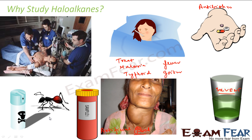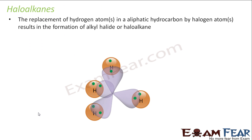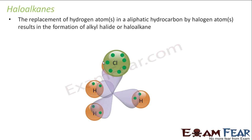Haloalkanes are nothing but alkane plus halogen. To prepare them, you take any alkane — for example methane — and replace a hydrogen with a halogen. For example, replace one hydrogen with chlorine, and what you get is a haloalkane: CH3Cl, which is a primary alkyl halide.